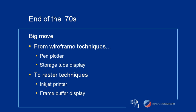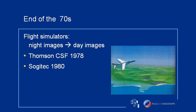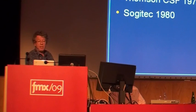It became possible to make somewhat realistic images with computers. So at the end of the 70s, flight simulators acquired the possibility to display fully shaded scenes — what we call day images — instead of just wireframe images, which were more representative of night scenes.